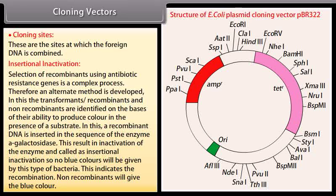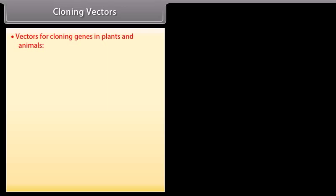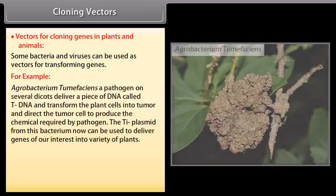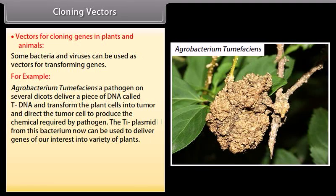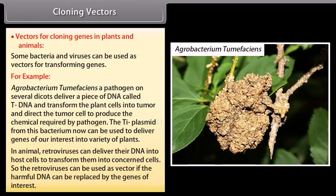Non-recombinants will give the blue color. Vectors for cloning genes in plants and animals: some bacteria and viruses can be used as vectors for transforming genes. For example, Agrobacterium tumefaciens, a pathogen on several dicots, delivers a piece of DNA called T-DNA and transforms the plant cells into tumor, directing tumor cells to produce chemicals required by the pathogen. The Ti plasmid from this bacterium can be used to deliver genes of interest into a variety of plants. In animals, retroviruses can deliver their DNA into host cells to transform them; so retroviruses can be used as vectors if the harmful DNA is replaced by genes of interest.